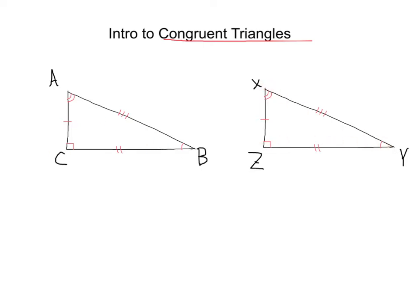Let's take a look at the angles. Here at angle C we've got a right angle, that corresponds with this right angle here, angle Z. We've got one congruent mark at angle B with one congruent mark at angle Y — those are congruent. And we've got two congruent marks here at angle A and two congruent marks at angle X. So each of these triangles have exactly the same angles.